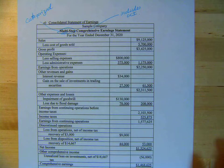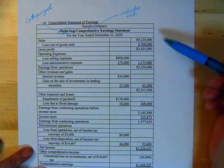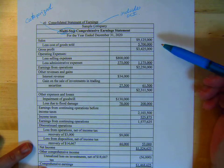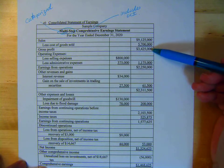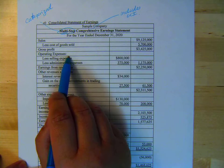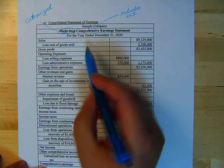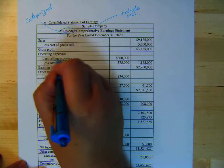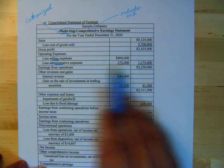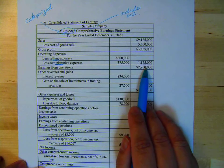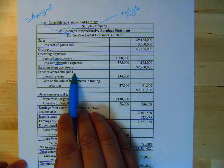This is a template for you. It shows exactly what it should look like, so we'll just briefly go through it. Here's our Sales, minus Cost of Goods Sold, Gross Profit. We've got our Operating Expenses broken down into Selling and Admin. So we have Earnings from Operations. Then we have the Other section.